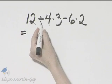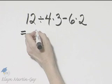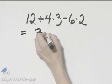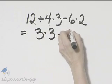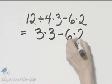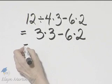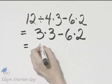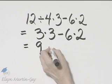So first I have division. 12 divided by 4 is 3. And I'll write down everything else I have. I'll multiply. 3 times 3 is 9 minus...